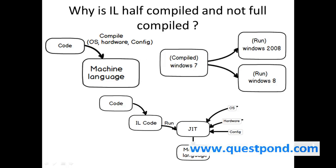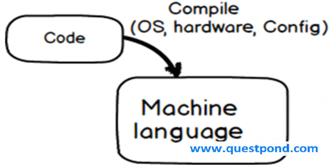The next question is: Why is IL Code half compiled and not fully compiled? When we talk about compiling, you have source code in C# or C++. Then there is a compiler who converts this source code into machine language. Your computer understands only machine language. When compiling, the compiler takes various parameters like the operating system, the hardware, and different other configurations.